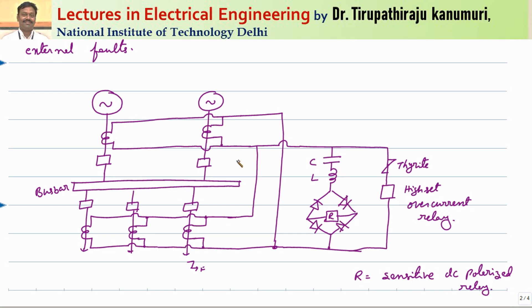For the case of internal faults, because of the L and C effect, sometimes high voltages may be induced. To avoid spoiling the circuit, a thyrite resistor is used, which acts as a short circuit for high frequencies and as an open circuit for low frequency components. Whenever the high frequency component comes, it is bypassed through the high-set overcurrent relay. This high-set overcurrent relay operates only for higher values of current. For external faults, only the difference of the two CT characteristic currents passes — not the complete fault current — so this high-set overcurrent relay should not operate.